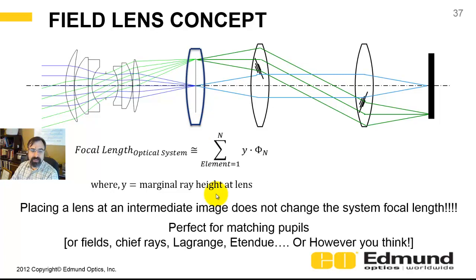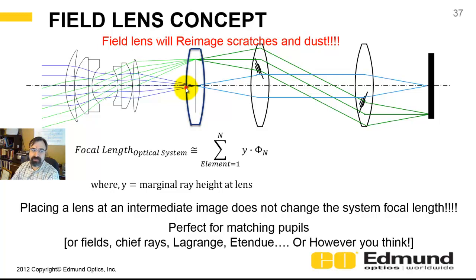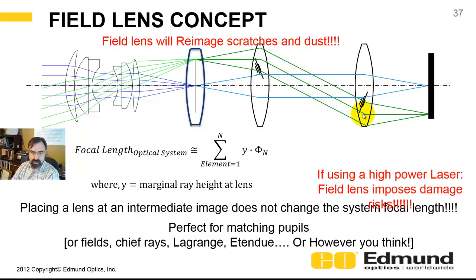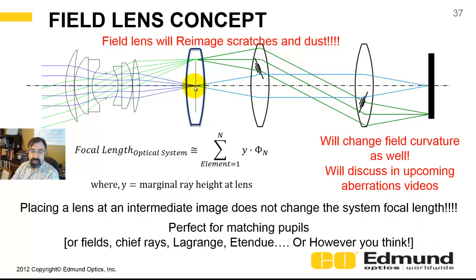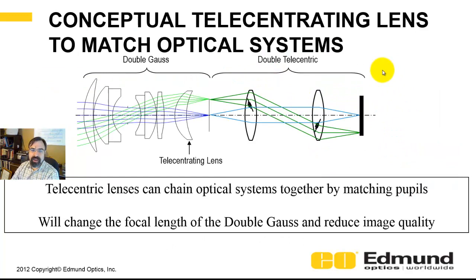There are some caveats. If there are scratches or dust on the field lens, they may be imaged right onto your detector, causing poor image quality. If you're using this in a high-power laser system focusing into an optical medium, you could blow your lens. In addition, putting this lens at an image is going to change the balance of field curvature through these systems — we'll discuss that in upcoming videos. In some cases you actually want to change your field curvature. A way around the problems with the field lens is to just put a telecentrating lens — as discussed in the last video.